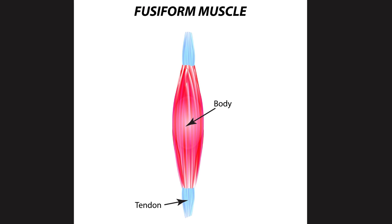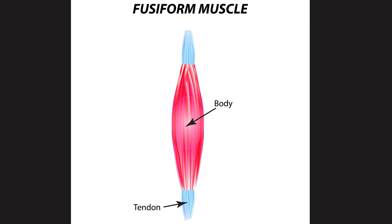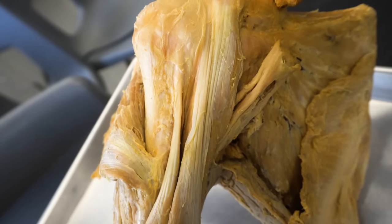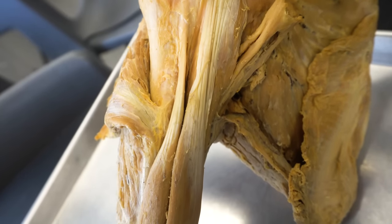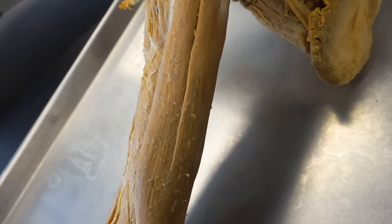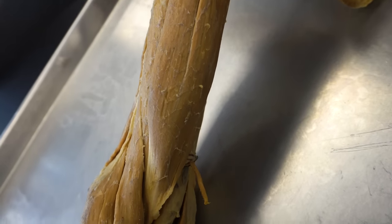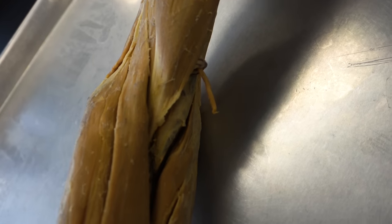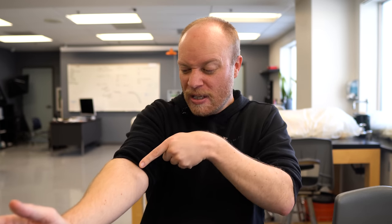Then you have the fusiform muscle shape. The classic example is biceps brachii — think of it like a spindle shape. On either end where the tendons are, the muscle takes a more narrow appearance, but in the center at the muscle belly it's more bulbous. This allows a significant amount of muscle mass to insert into a really small, tight area — exactly what biceps brachii does, pushing through to its radial attachment at the radial tuberosity.